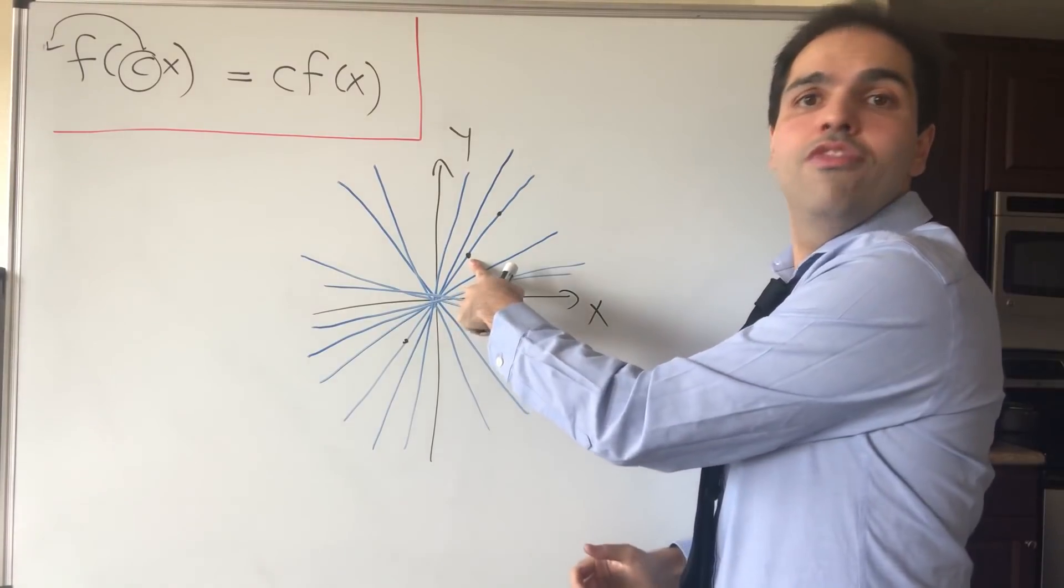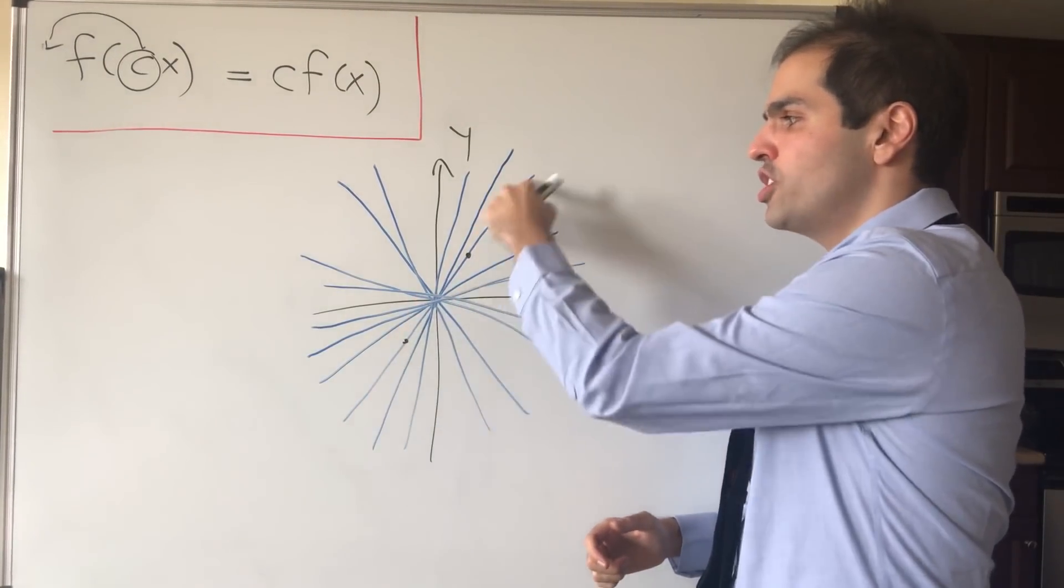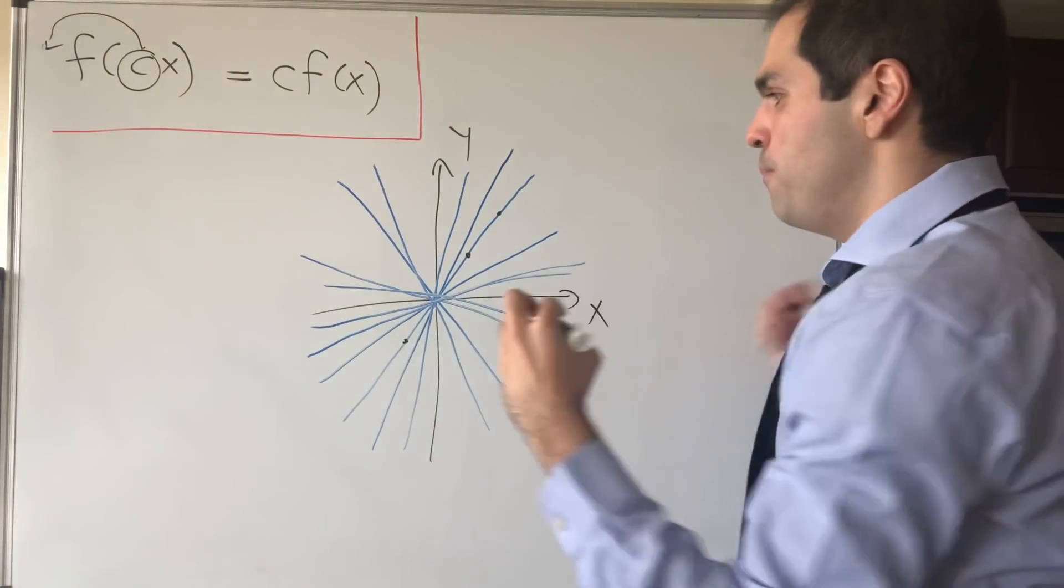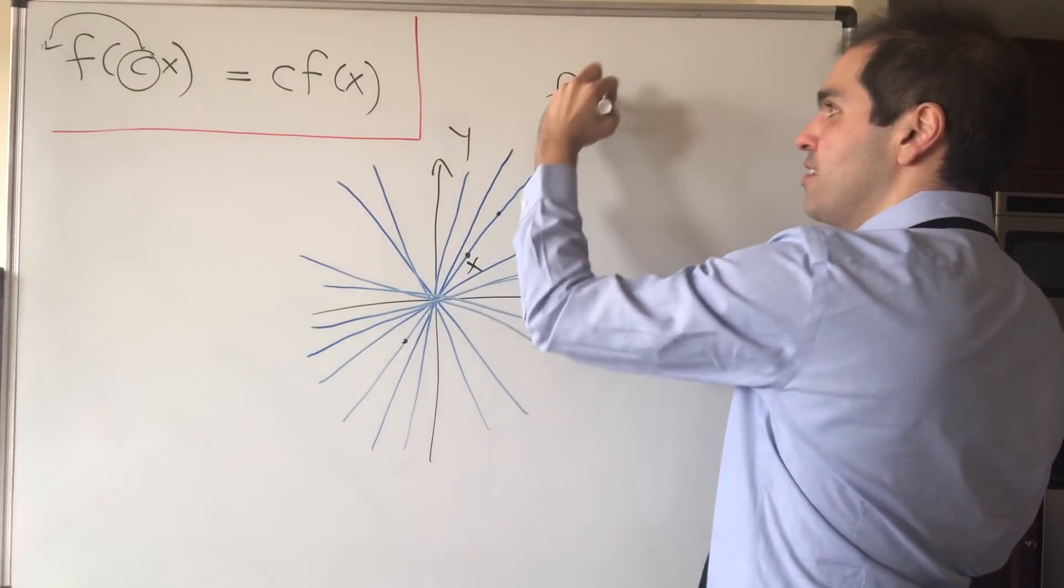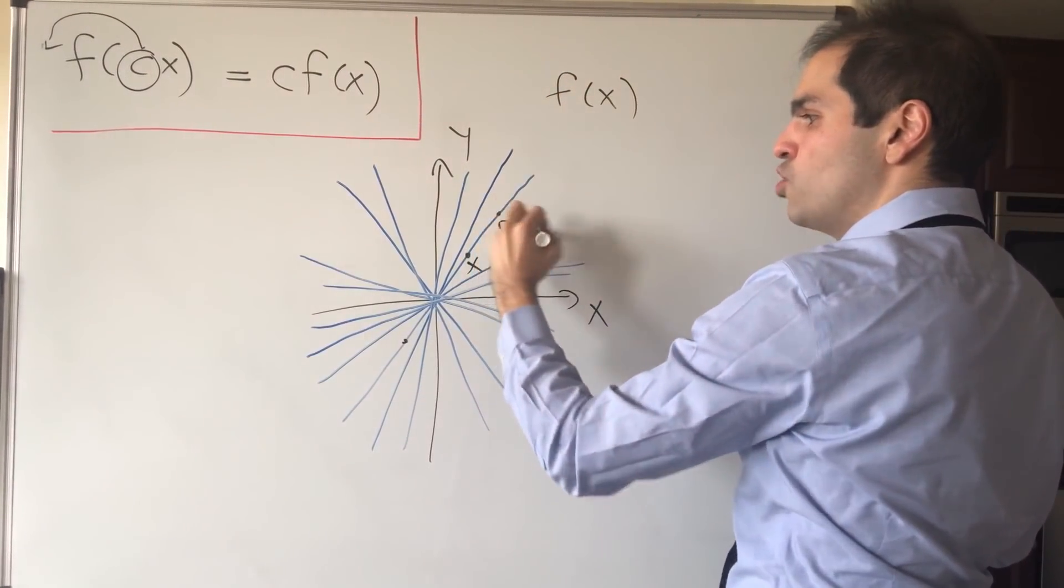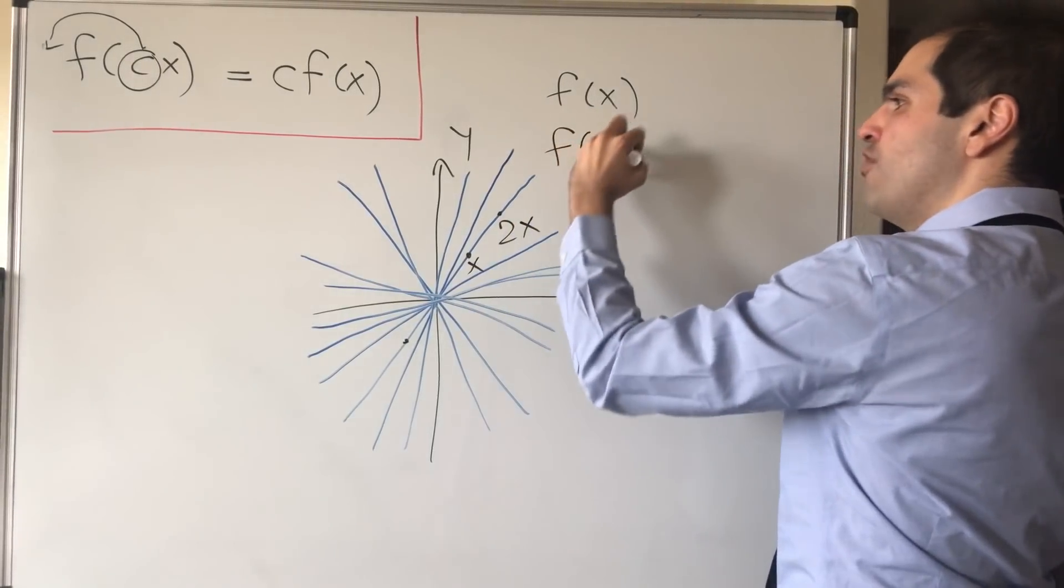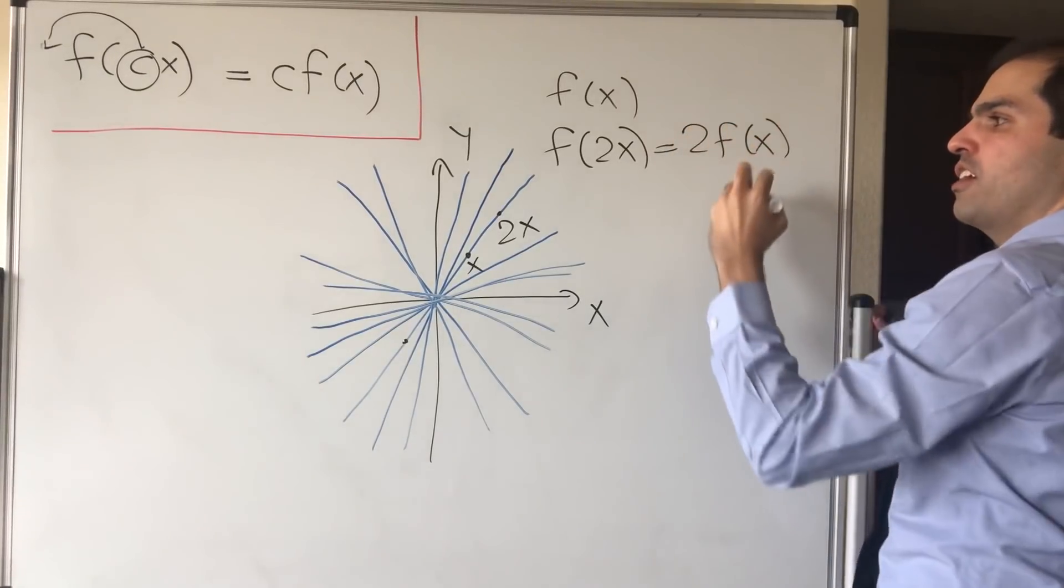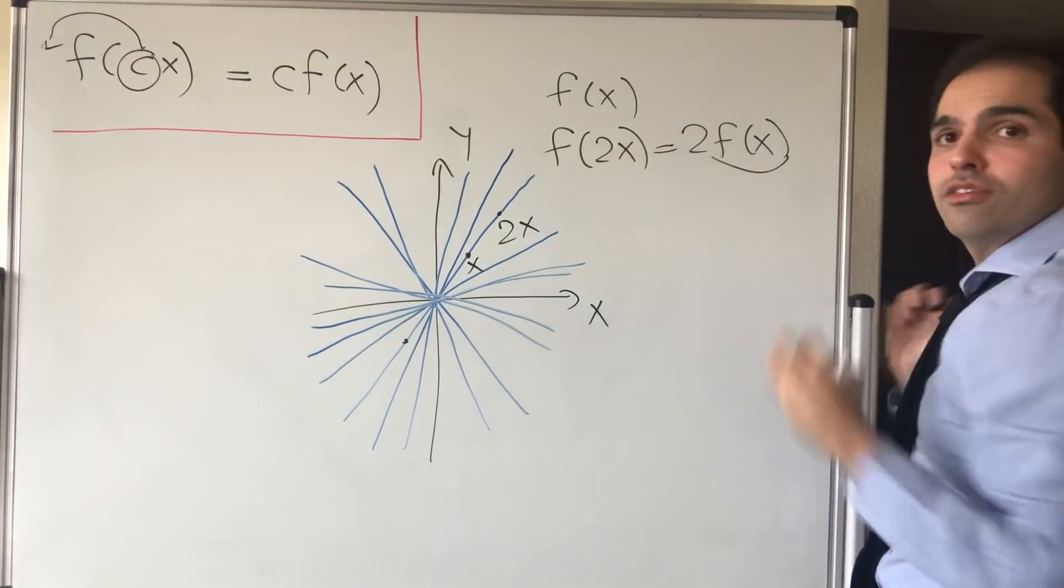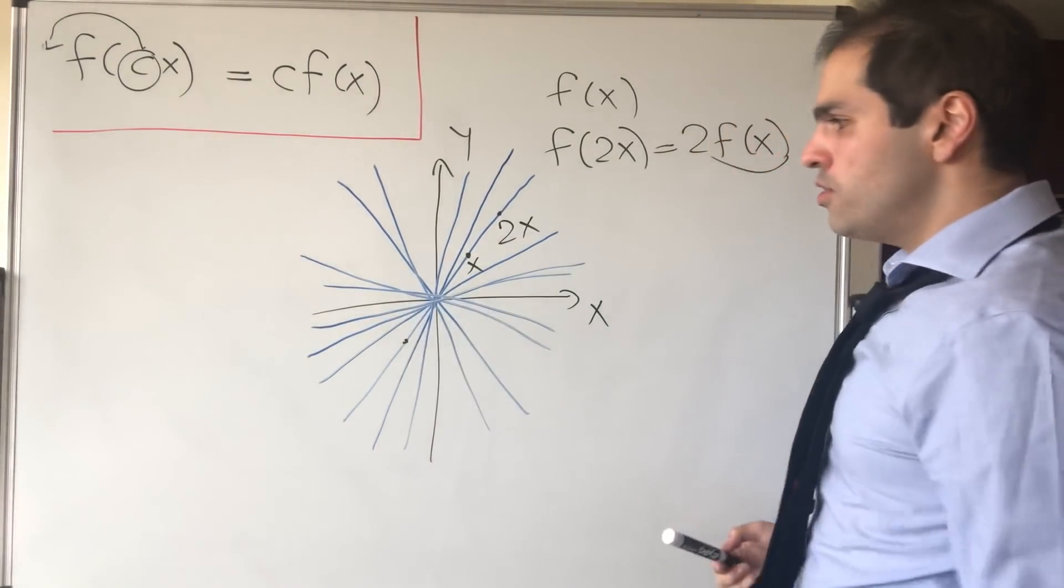In terms of a function, what that really means, if you know the value at this point, you actually know the value of your function on the whole line. Because, for instance, if this is x and you know f of x, and if this is 2x, then by definition you know f of 2x, because by definition that's just 2f of x. If you know f of x, you automatically know f of 2x.